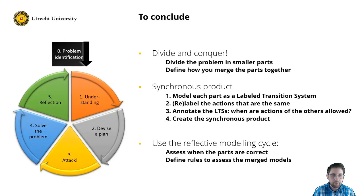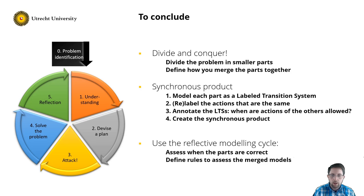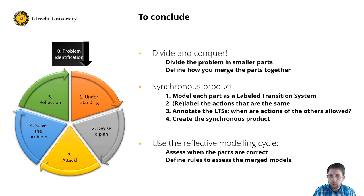To conclude: divide and conquer is an approach we often follow in modeling. We can do this with labeled transition systems using the synchronous product. This approach consists of four steps: model each part as a labeled transition system, relabel the actions that are the same, annotate the individual LTSs to specify when actions of the others are allowed, and create a synchronous product. Remember, this approach does not replace the reflective modeling cycle — the synchronous product is a tool in your toolbox. You still need to go through the stages of the reflective modeling cycle. With this technique, divide and conquer becomes possible. Good luck modeling!